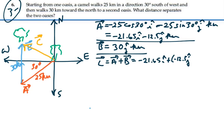plus vector B, which is 30 j. All in kilometers. So that's going to be equal to negative 21.65 i, plus 17.5 j, kilometers.